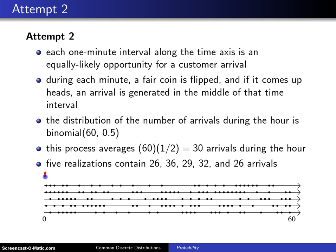If you look at this first time interval right here, we got a head, so we have arrival. And then another head, and then another head, and then we got a tail, and it looks like maybe a second tail, and then a head, and then a head, and on it goes. And that is one way of generating an arrival process. It turns out the number of arrivals that occurs during the hour is binomial with parameters n equals 60 and p equals 0.5.